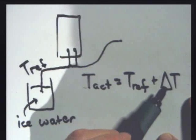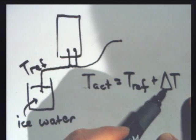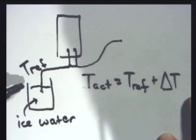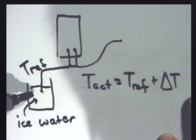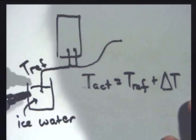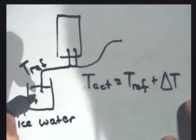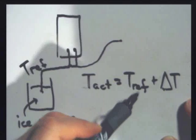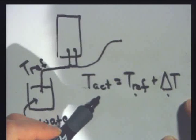The thermocouple measures the temperature difference. It reads a voltage difference, which you convert to a temperature difference. Then you need to know one of the temperatures. If the temperature difference is 5 Celsius degrees and the reference is 0 degrees Celsius, then the actual temperature is 0 plus 5, which equals 5 degrees Celsius.